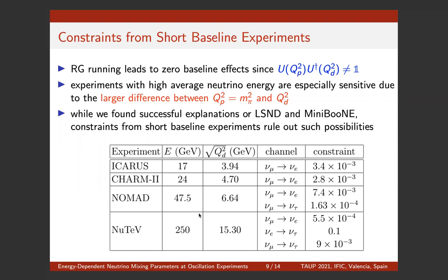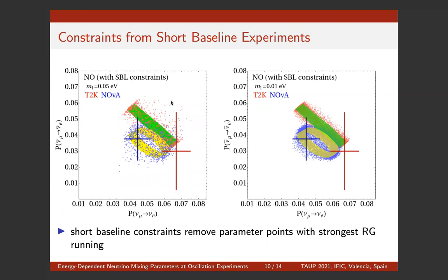I would also like to point out that this type of experiment killed all of the successful explanations of LSND and MiniBooNE that we found. What was previously shown on a log-log scale is now shown on a linear plot, and the new physics points are not strongly exceeding the one-sigma regions from T2K and NOvA — though they are still sometimes well above those regions. This is for a mass of 0.05 eV and also for 0.01 eV.